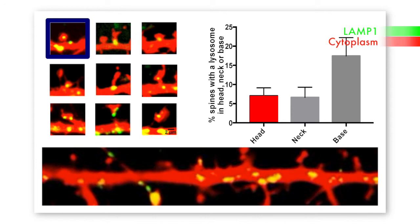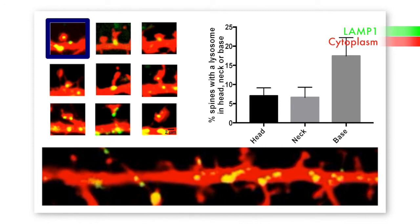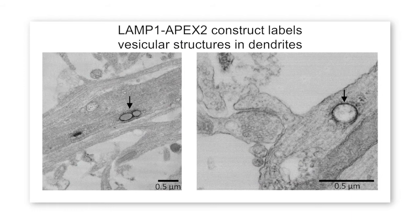Not only that, there was also a heterogeneity in size. Gu et al. could also visualize LAMP1-positive structures in dendrites by electron microscopy using the engineered peroxidase APEX2, which can oxidize diaminobenzidine into an EM contrasting agent. By fusing this enzyme directly to LAMP1, the authors were able to observe LAMP1-positive vesicular structures in dendrites and in proximity to spines.